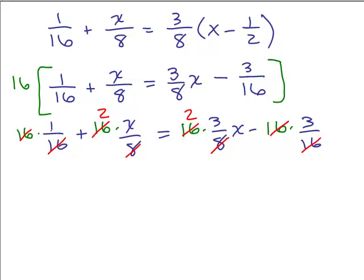So remember there's still a 1 here. So what do we have? 1, that's the first term, plus 2x equals 6x minus 3. So we did the distributive property, then we multiply by the least common denominator, and now we have an equation without fractions or parentheses.